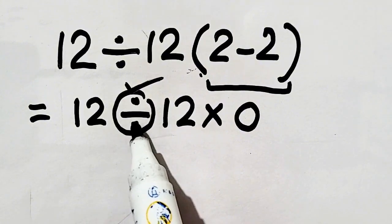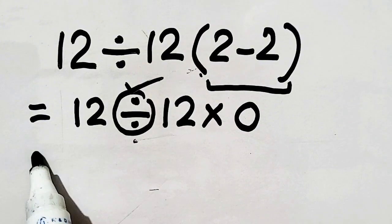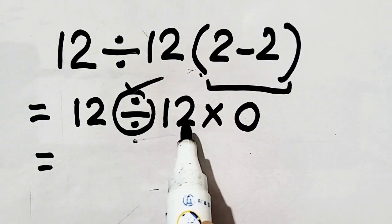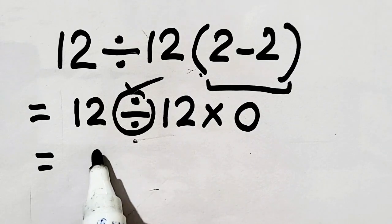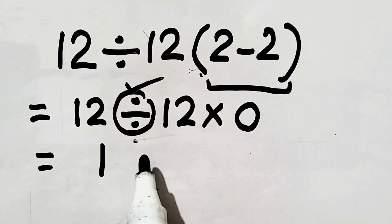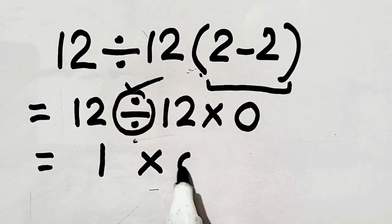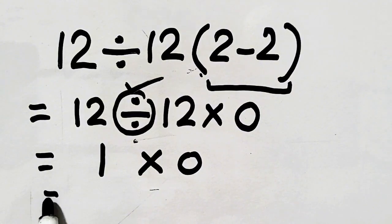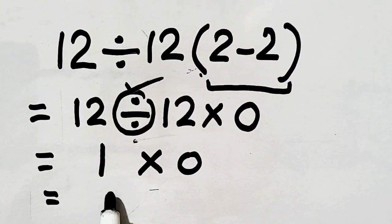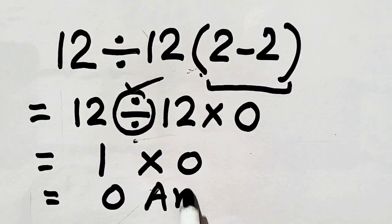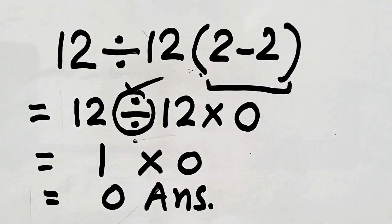Now, division is at left so we have to perform division first. 12 divided by 12 equals 1 times 0. So 1 times 0 equals 0. Hence, 0 will be our answer.